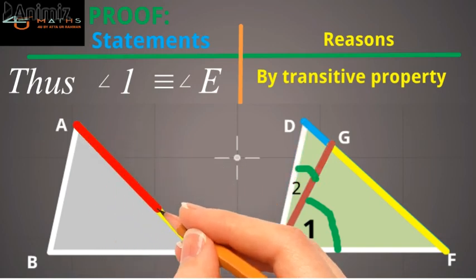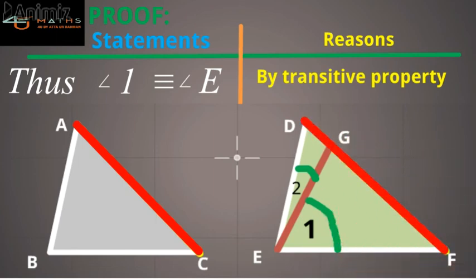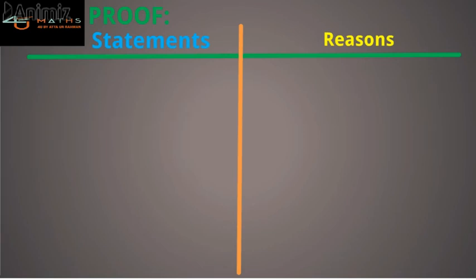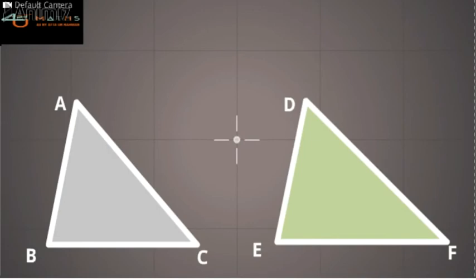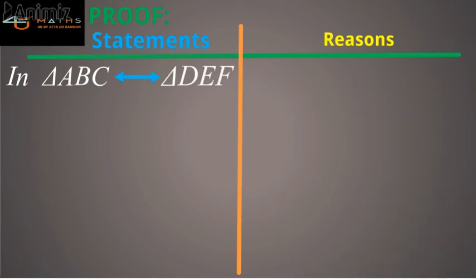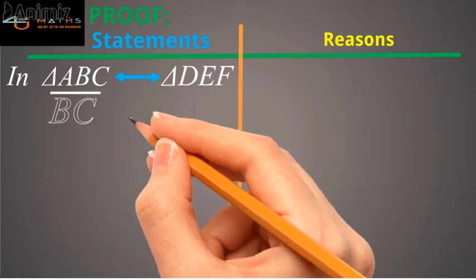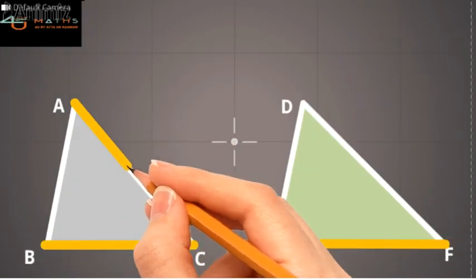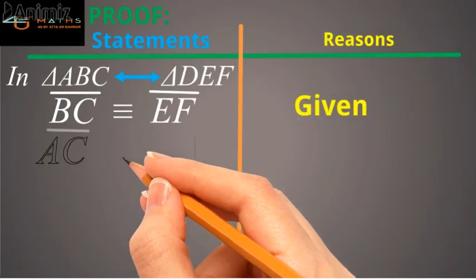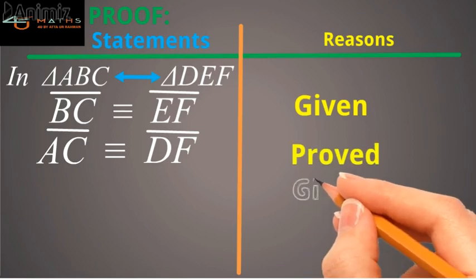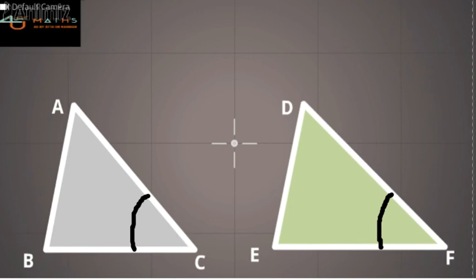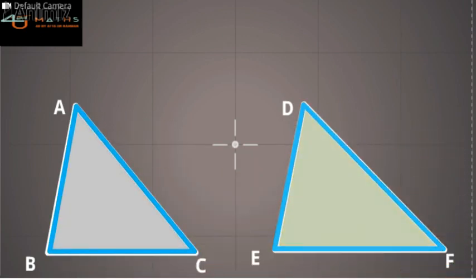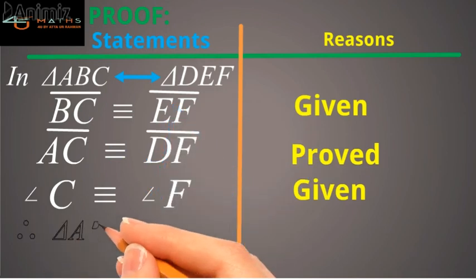This further implies that side AC is congruent to side DF. Now we compare triangle ABC with triangle DEF. In the correspondence of triangle ABC with triangle DEF: side BC is congruent to side EF — as given; side AC is congruent to side DF — as proved above; and angle C is congruent to angle F — as given. Therefore, we conclude that triangle ABC is congruent to triangle DEF, by the side-angle-side postulate. And this is what we wanted to prove.